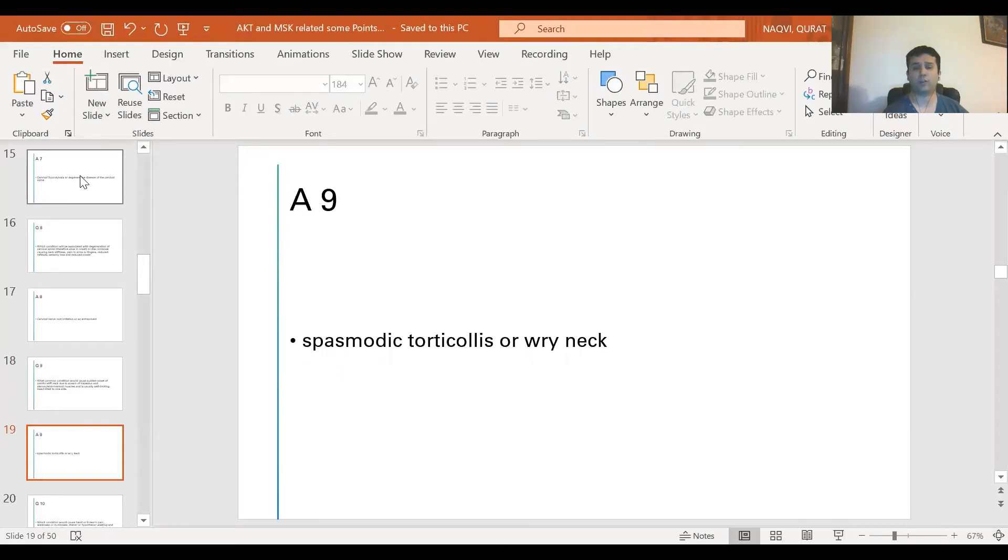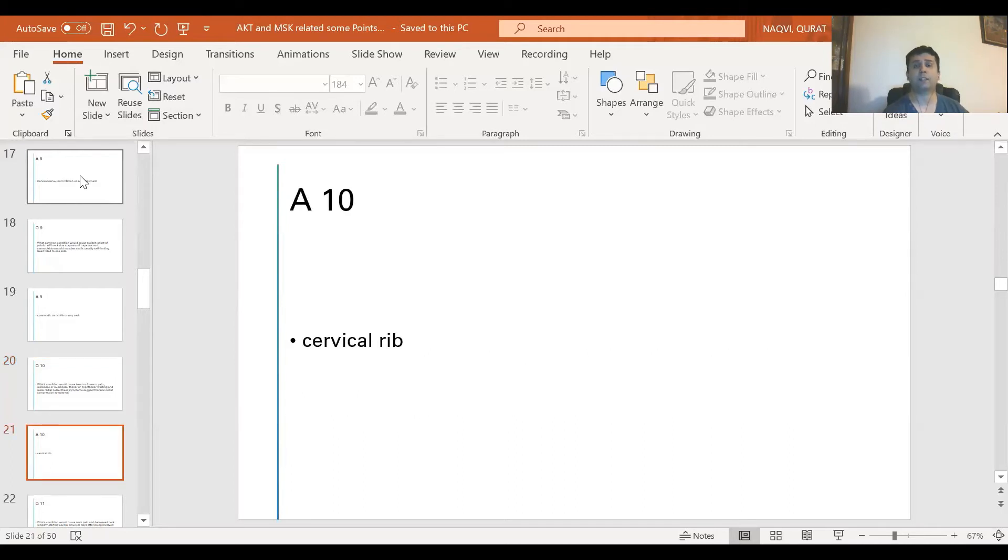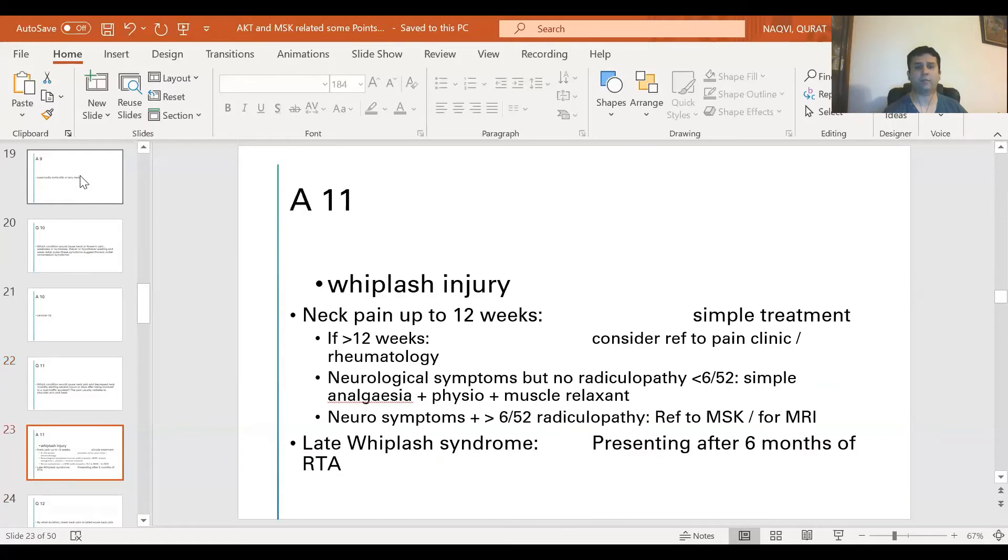Question 10: Which condition would cause hand or forearm pain, weakness or numbness, thenar or hypothenar wasting and weak radial pulse? These symptoms suggest thoracic outlet compression symptoms. The answer is cervical rib. Question 11: Which condition would cause neck pain and decreased neck mobility starting several hours or days after being involved in a road traffic accident? The pain usually radiates to the shoulder, arm, and head. The answer is whiplash injury.